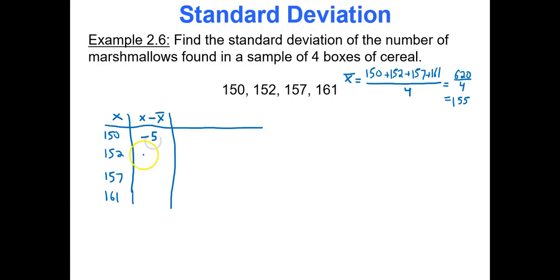152 minus 155 is negative 3. 157 minus 155 is 2. 161 minus 155 is 6. If you add up all these differences you should actually get zero—it's just a little checkpoint there. All the deviations added together, which is what we just found, would be zero.